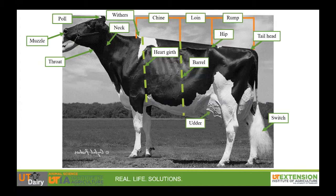Next is the udder. This is the moneymaker of the dairy cow. It is easily identifiable on an adult dairy cow. The udder is still located in the same place on a heifer, although it will be much smaller and not really visible without looking harder for it.